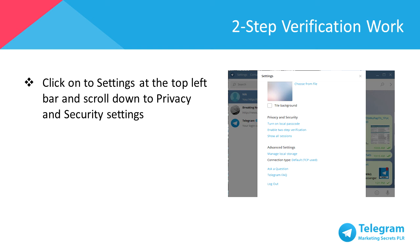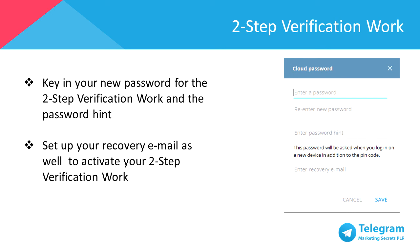To set this up, click on Settings at the top left bar and scroll down to Privacy and Security Settings. Key in your new password for the two-step verification and the password hint to correspond with it. Set up your recovery email as well to activate your two-step verification.